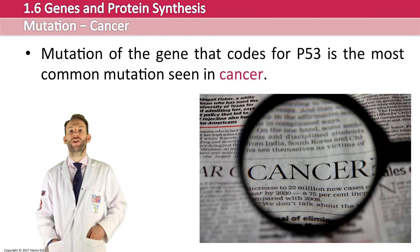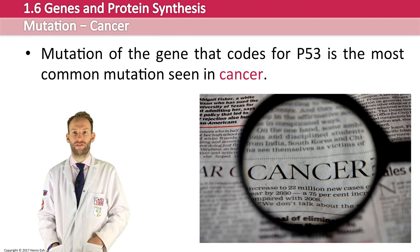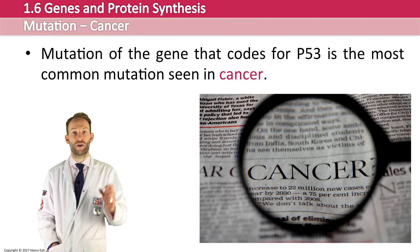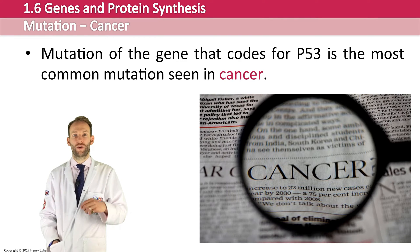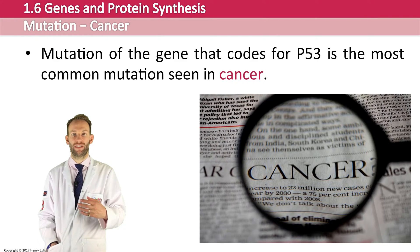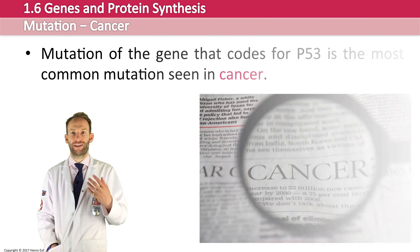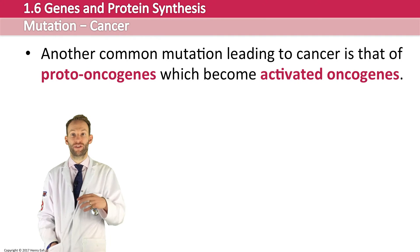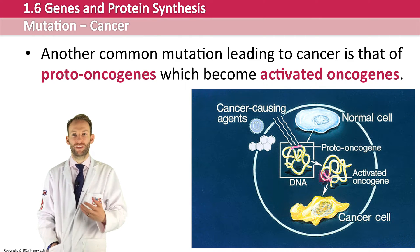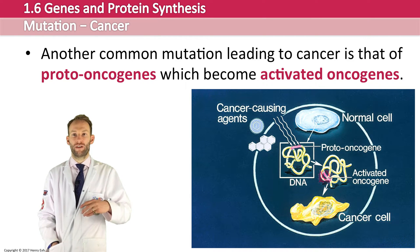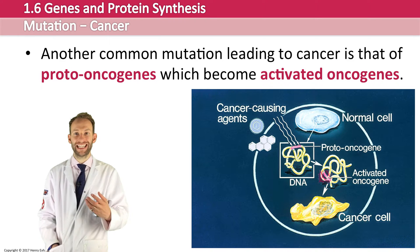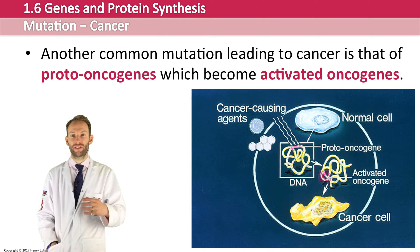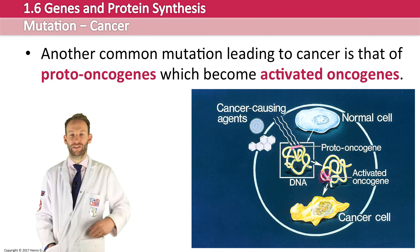Another common mutation in cancer is that of proto-oncogenes, which then become activated oncogenes. There are around 40 different proto-oncogenes in humans, all with roles related to controlling cell division, but when they get mutated to oncogenes, cell division is no longer controlled and this leads to cancers forming.